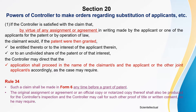Let's discuss Section 20. Subsection 1 says: if the controller is satisfied with a claim that by virtue of any assignment or agreement in writing — not in verbal mode — by the applicant or any one of the applicants for the patent, or by operation of law, the claimant would be entitled thereto, or to the interest of the applicant, or to an undivided share of the patent or of that interest, the controller may direct that the application shall proceed in the name of the claimant or claimants and the applicant or joint applicants accordingly.